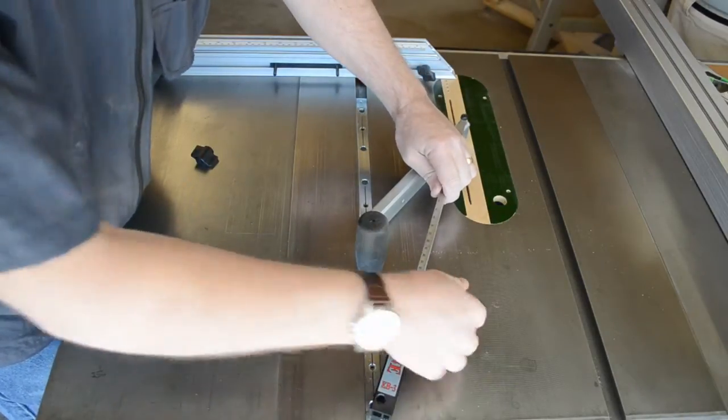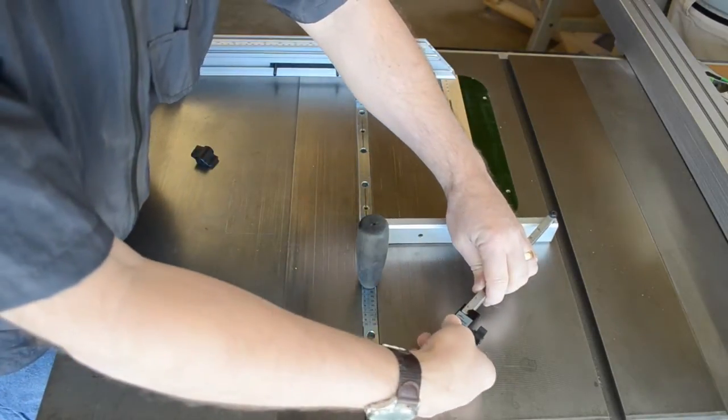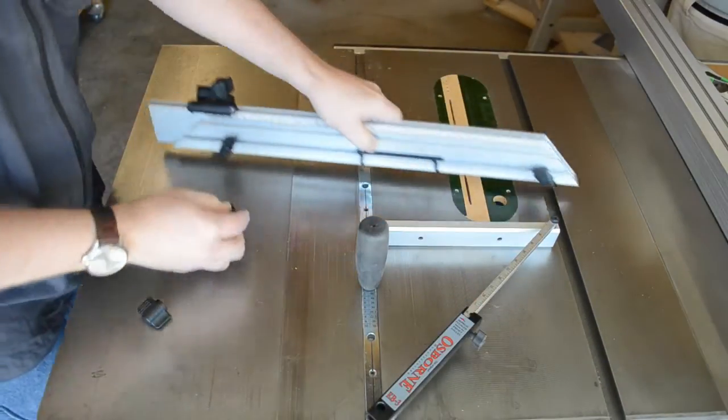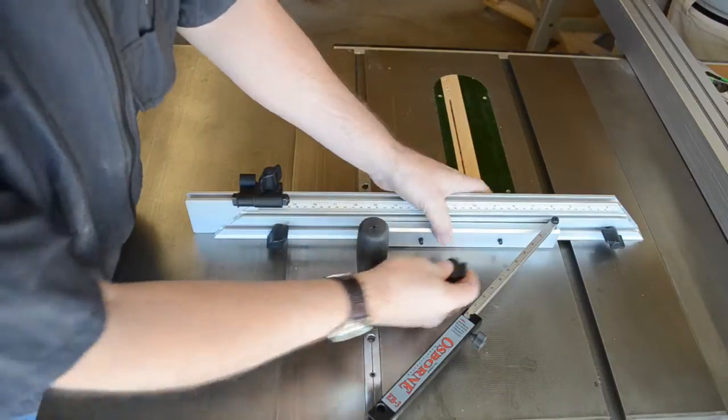Rotate the fence mount and the outer brace to the opposite side of the guide bar and reassemble. And reattach the fence to the fence mount.